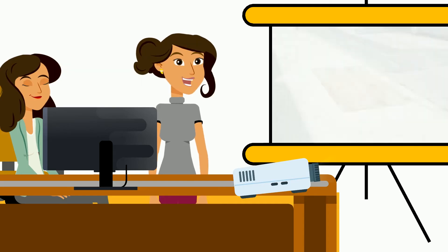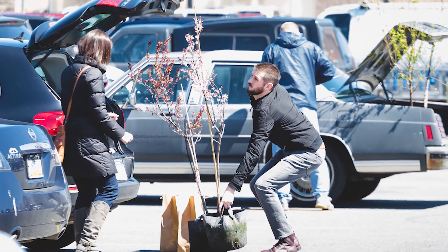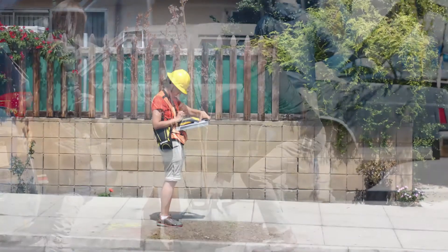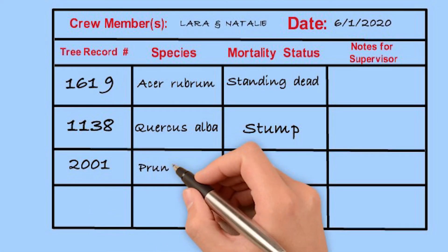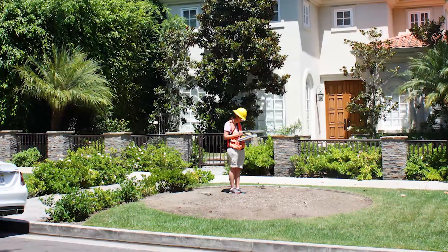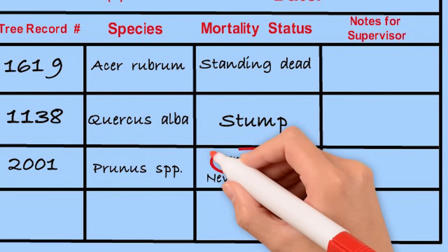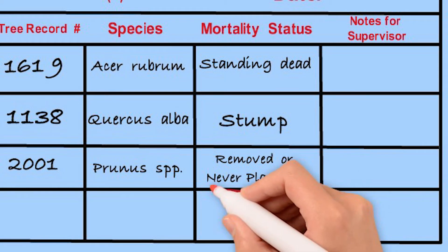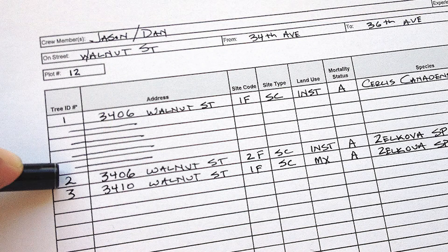What about trees that are missing or removed — should I call those dead? We're actually not going to call missing trees dead. If you're doing a monitoring project checking on trees from a planting program and there's no tree at that spot, two categories can apply: removed or never planted. Both require that there's no sign of a stump or standing dead tree. If a tree was removed since the previous observation, categorize it as removed. If it was designated to be planted but never made it into the ground — perhaps the homeowner didn't want it or there was an unexpected utilities problem — it's listed as never planted.